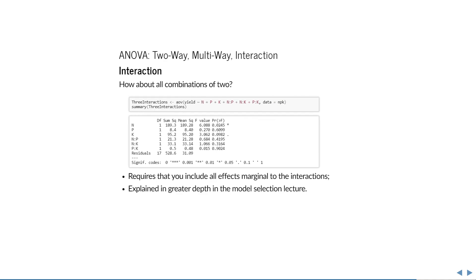Here's how to compare all combinations of two. Adding interactions to your model requires that the variables that are part of the interaction are also in the model. In other words, you cannot exclude N, P, or K from the model if you want to compare their combinations. This concept is explained in greater depth in the model selection lecture.